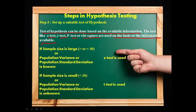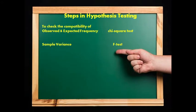If sample size is large — 30 or more — and population variance or population standard deviation is known, then we use Z-test. If sample size is small — less than 30 — and population variance or standard deviation is unknown, then we use T-test. If we need to check compatibility of observed and expected frequencies, we apply the Chi-square test, which is a non-parametric test. If we need to check variance of samples, we use F-test.